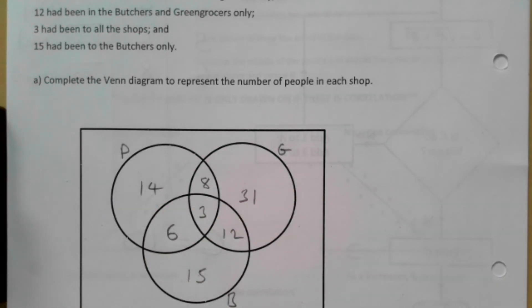Complete the Venn diagram to represent the number of people in each shop. So that's kind of what we've done, we should have one outside as well. Calculate then part B, which you can see below.